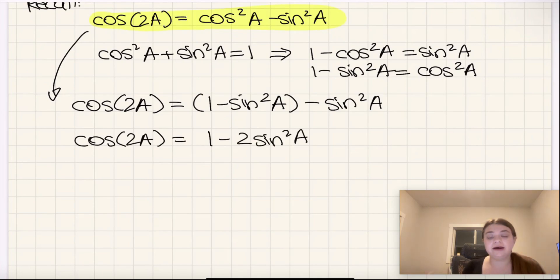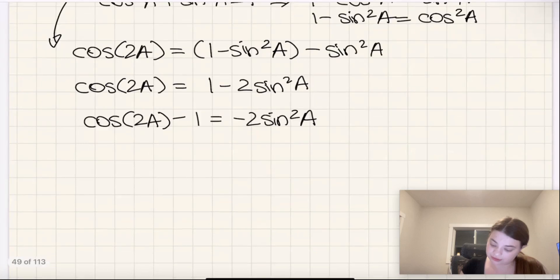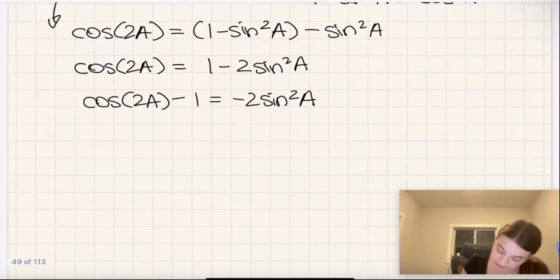Now I'll solve for sine squared A. Subtracting 1 from both sides gives cos 2A minus 1 equals negative 2 sine squared A. Dividing both sides by negative 2 gives sine squared A equals negative cos 2A minus 1, all over 2.